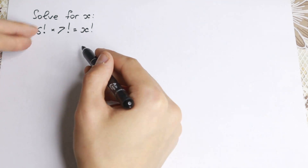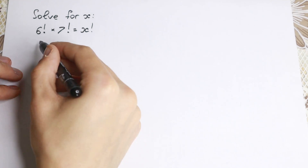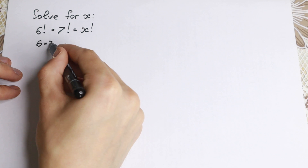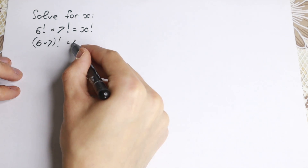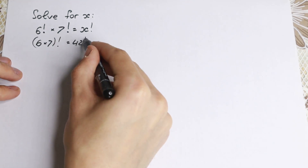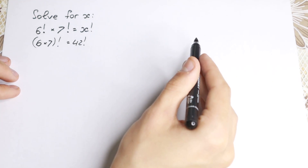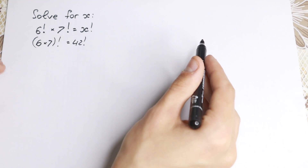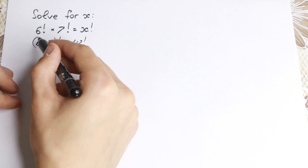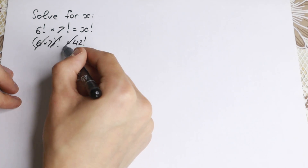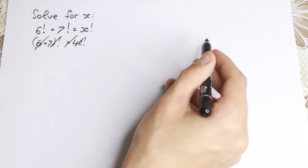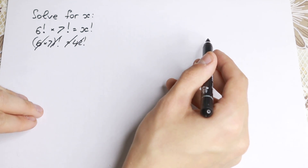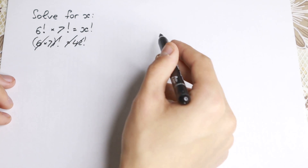A first instinct might be to write 6 factorial times 7 as 6 times 7 factorial, equal to 42 factorial, so x equals 42. But this is absolutely incorrect — we cannot solve a factorial question like that. Factorials and normal numbers are completely different; we cannot just multiply them that way.